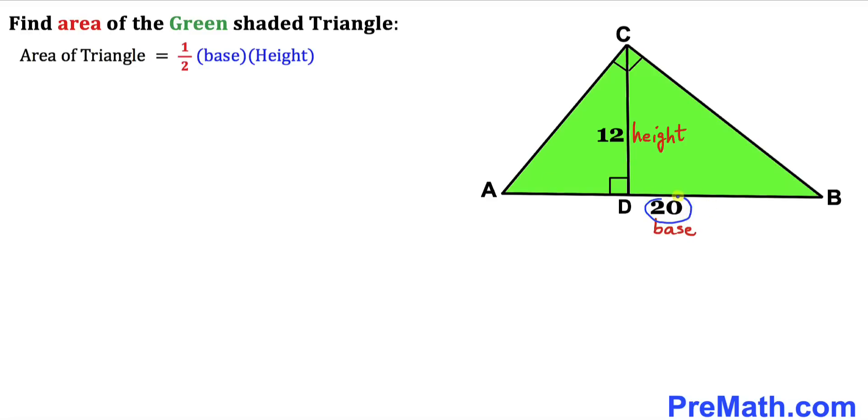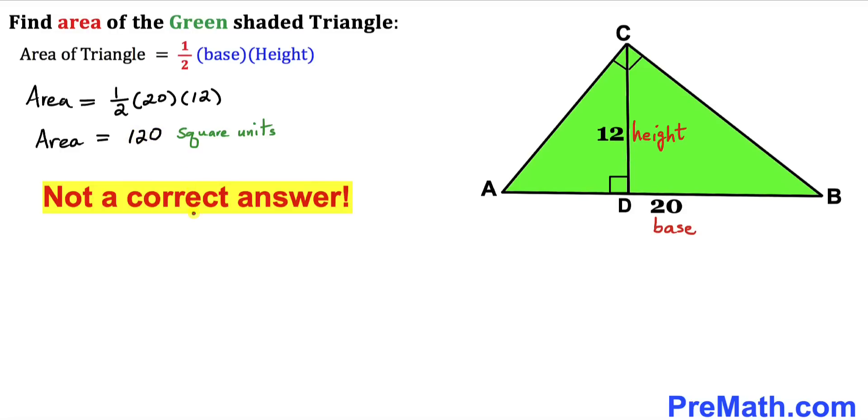In our case, base AB is 20 units and height CD is 12. Therefore, the area of triangle ABC is one-half times 20 times 12. If we simplify everything, we get 120 square units. However, this is not the correct answer. This is wrong, but why?